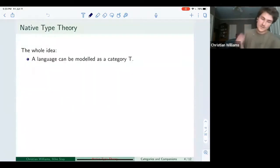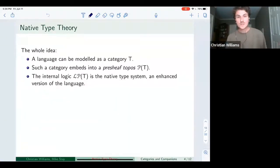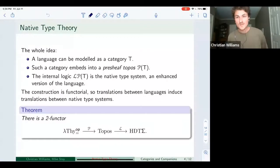So the whole idea of native type theory is as follows. A language can be modeled by a category with enough structure that you need. So for us, it will be products, internal HOMs, and finite limits. And such a category embeds into a presheaf topos, which is just a much richer structure. And this embedding preserves the structure that you needed to define this theory. And the internal logic of this topos is the native type system of the language, which can be understood as an enhanced version of your original language. So that's really the whole idea of native type theory.